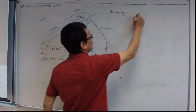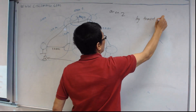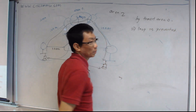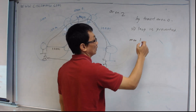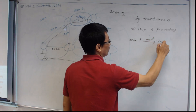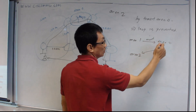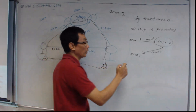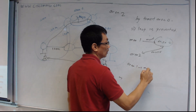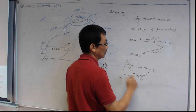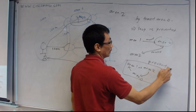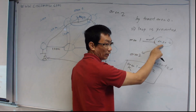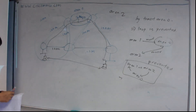By transiting area 0, looping is prevented. If you are in area 1 and want to reach area 2, you must go to area 0 first. This prevents the behavior where area 1 goes to area 2, then to area 0, then back to area 1. This is prevented by forcing all non-backbone area traffic to go through area 0. This is for loop prevention. However, because of this rule, you might result in suboptimal routing in some situations, which is topology dependent.